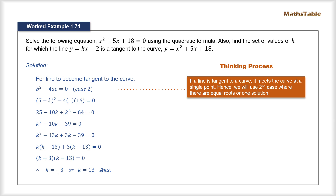Using k equals minus 3, the line becomes y equals minus 3x plus 2. Drawing this line and the curve on the same grid, we see that the line is tangent to the curve, meeting it at one single point. Similarly, substituting k equals 13 gives the line y equals 13x plus 2, and drawing both on the same grid again gives a single point of intersection between the line and the curve.